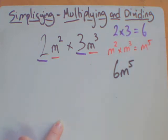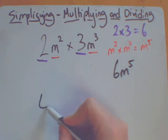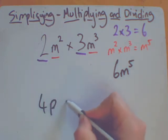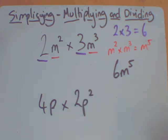m to the power of 5. So I've done the numbers and I've done the letters, but I've done them separately. Let's take a look at a second one. So what would happen if I had 4p times 2p squared?